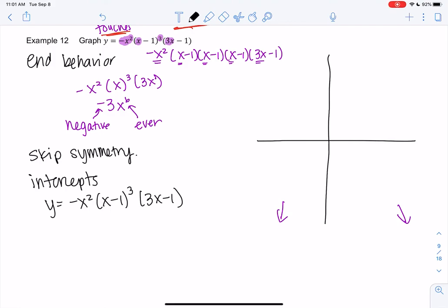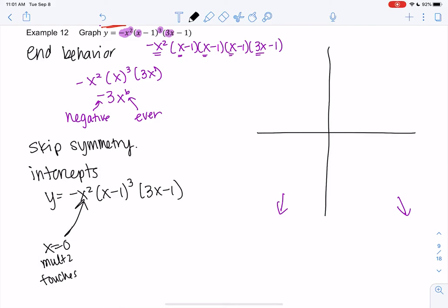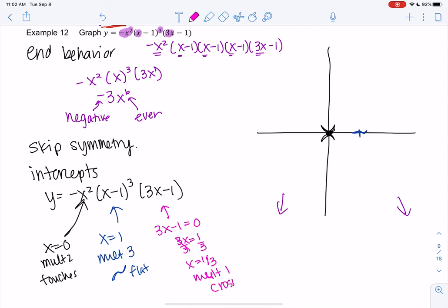We have 0 with multiplicity of 2, meaning it touches at 0, 0. So it's going to touch or touch depending on where our graph is. We have x equals 1, multiplicity of 3. Multiplicity of 3 means it's flat but crosses. So at 1, it'll be flat, but it crosses. And then our last one is a little trickier, so we'll solve this one. 3x minus 1 equals 0. So add 1, divide by 3, so we get 1 third. With multiplicity of 1, so it just crosses. So 1 third would maybe be right there.